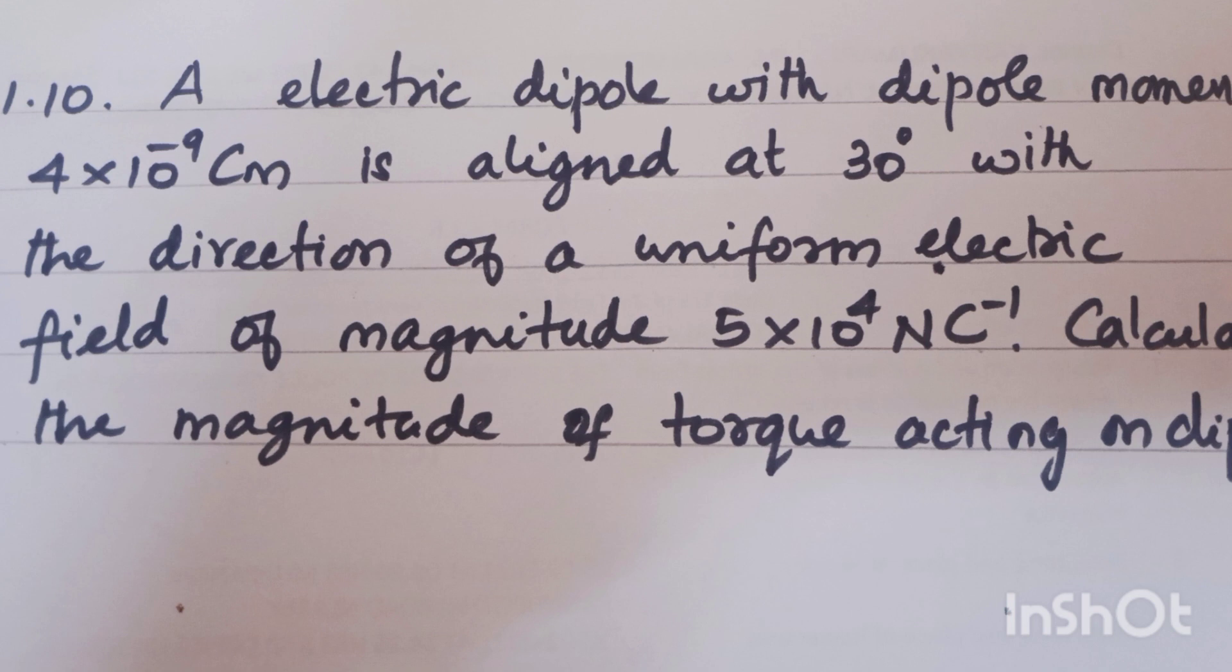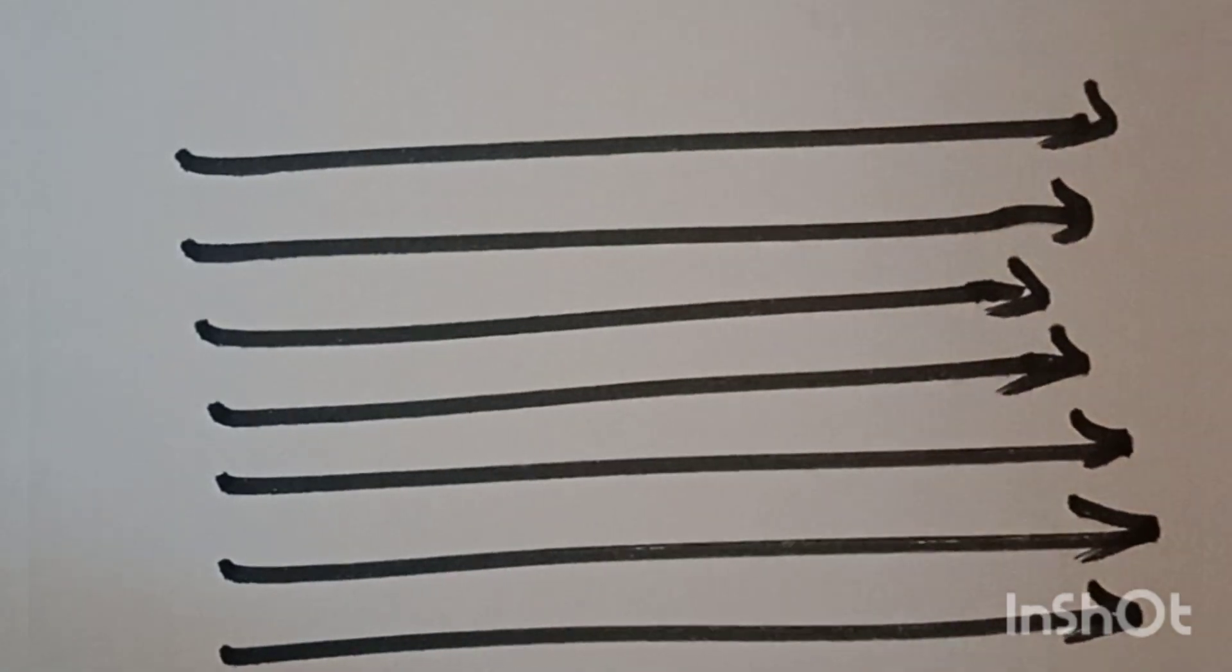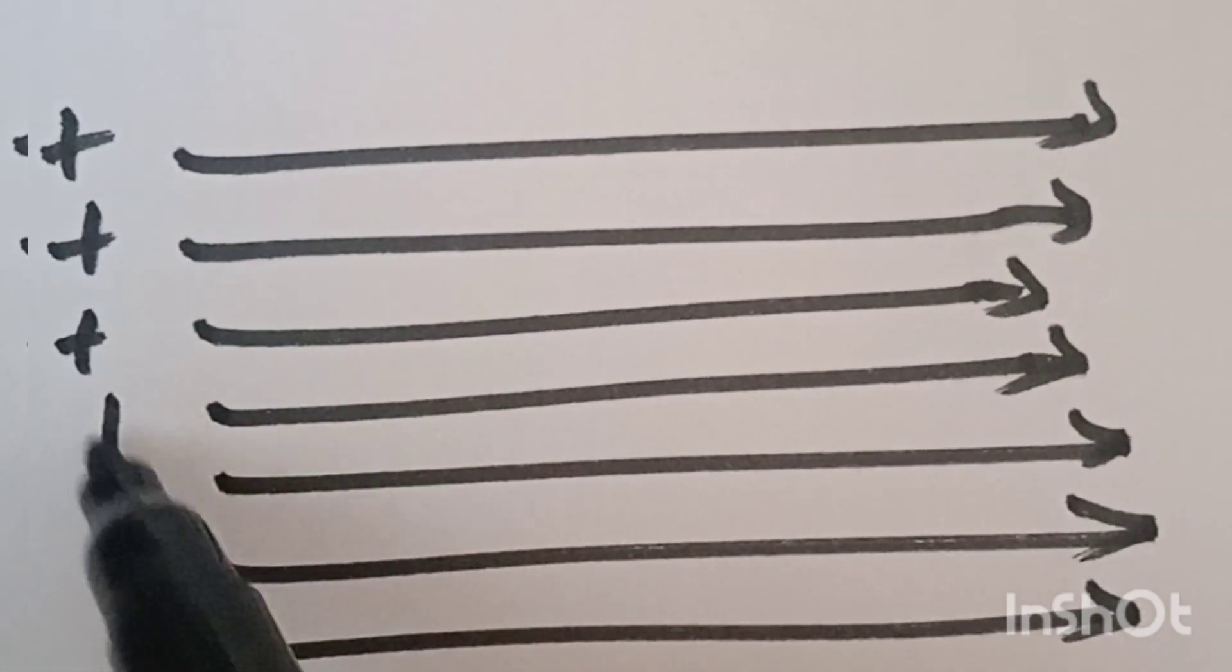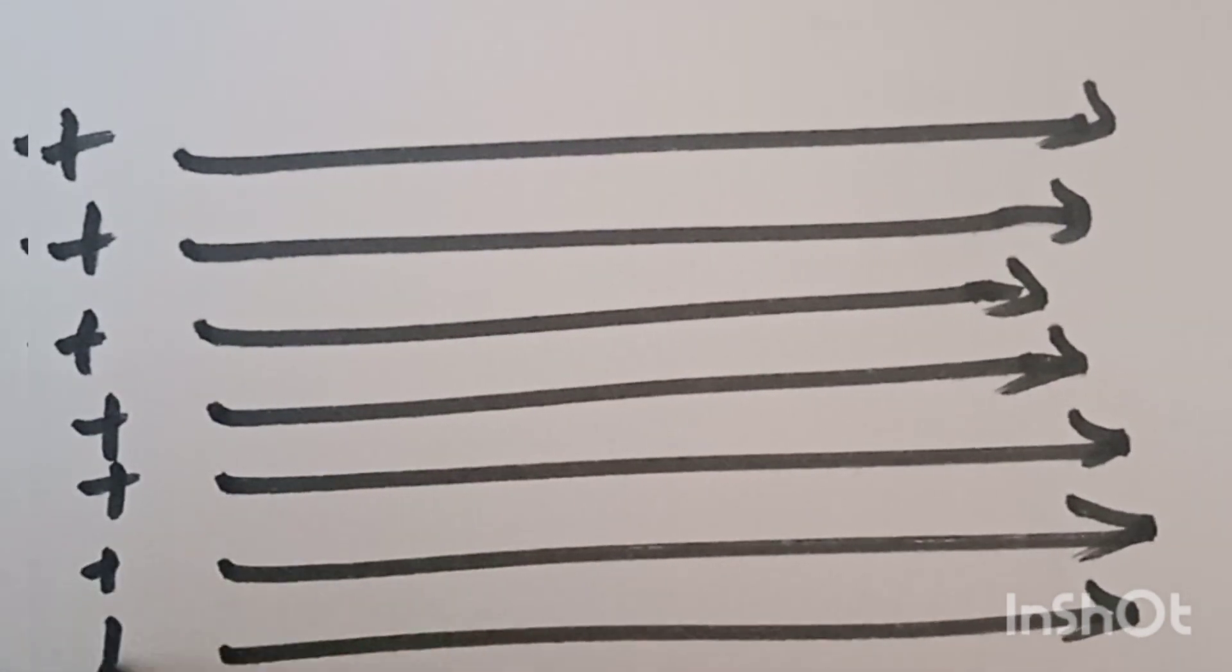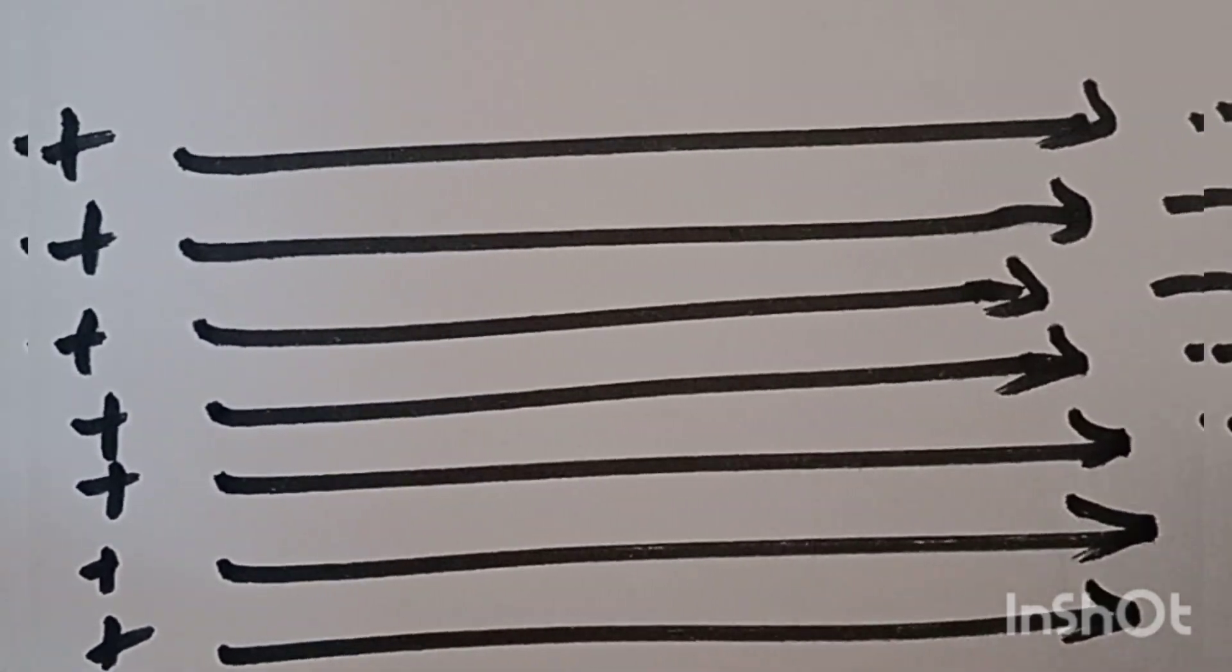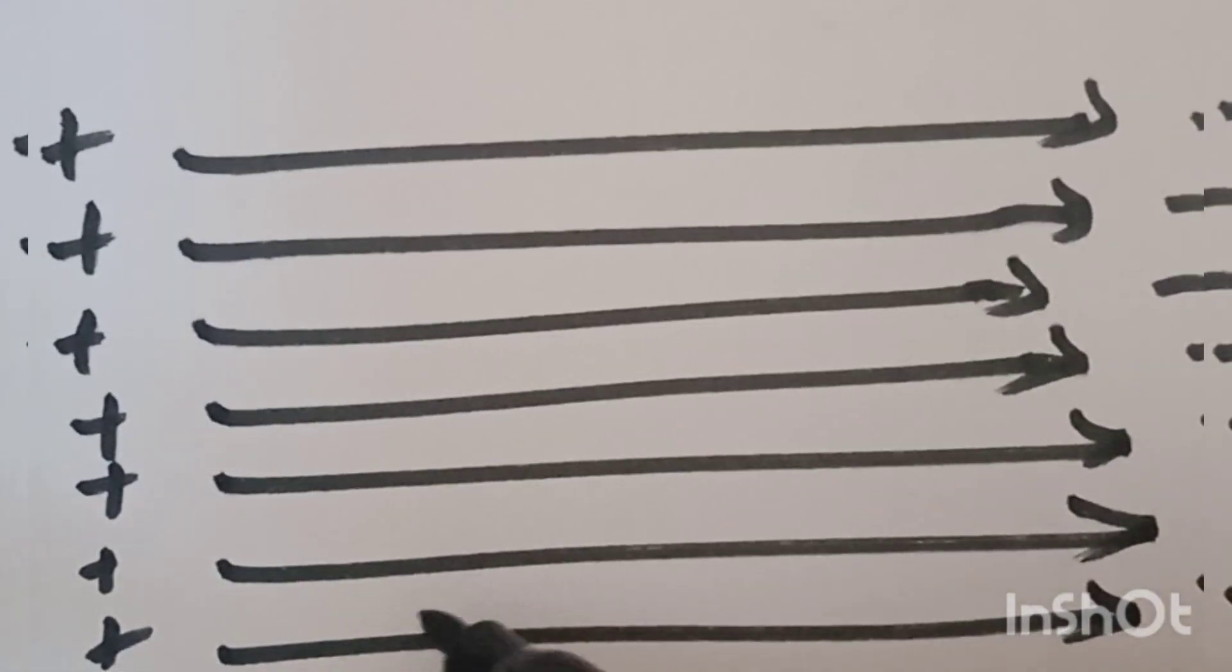An electric dipole with dipole moment 4 × 10^-9 coulomb meter is aligned at 30 degrees with the direction of a uniform electric field of magnitude 5 × 10^4 newton per coulomb. Calculate the magnitude of the torque acting on the dipole.